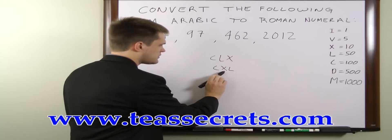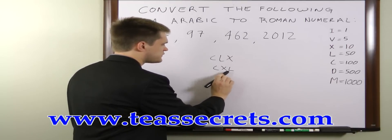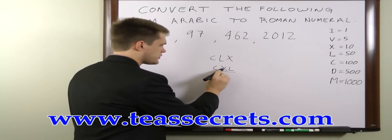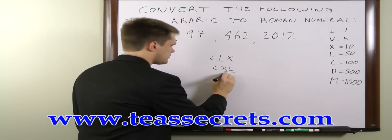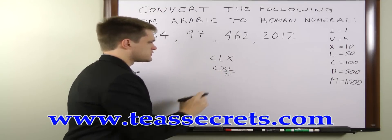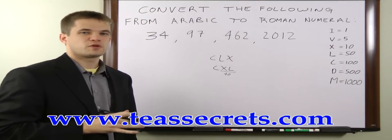Instead of this being 100 plus 10 plus 50, what you have here is this being considered a single number, 50 minus 10, or 40. This number is in fact 100 plus 40. Those are the three things you have to remember.